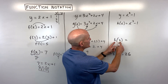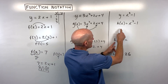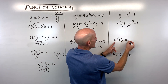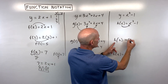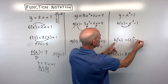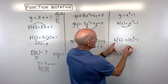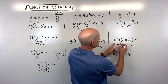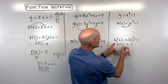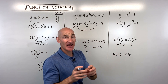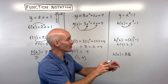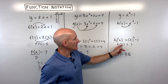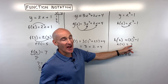So if we want to find h of 2, whatever's in parentheses goes in for x on the right — put it in parentheses and treat it like a group. 2 cubed is 8, minus 1 is equal to 7. So h of 2 equals 7. Two is your x, seven is your y.